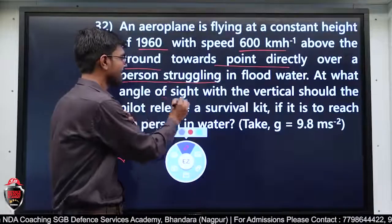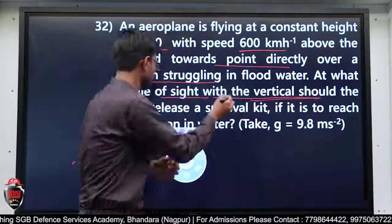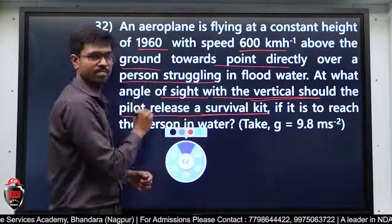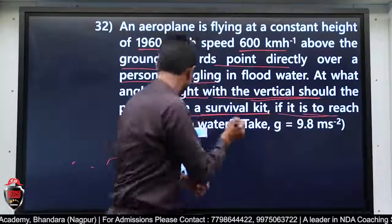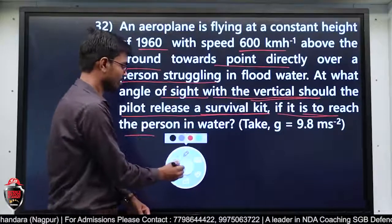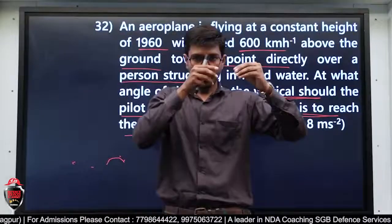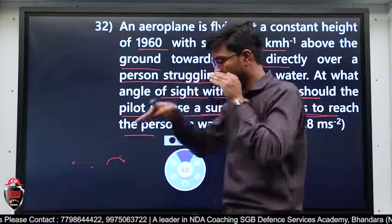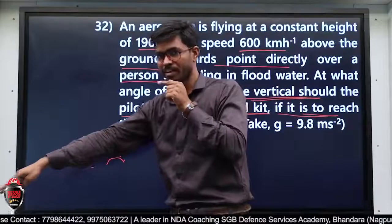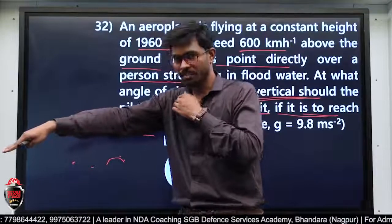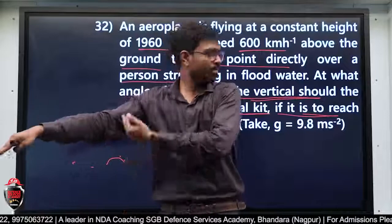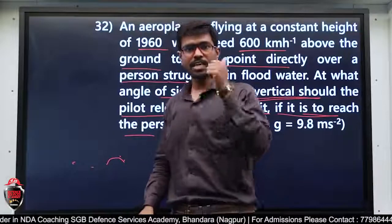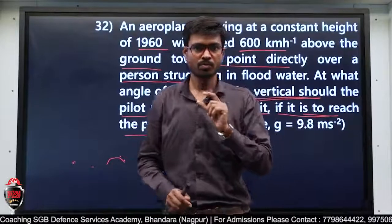At what angle of sight with the vertical should pilot release a survival kit, if it is to reach the person in the water? मतलब pilot बैठा हुआ है, वो नीचे देखेगा — तो यह line of sight हो गई डूबने वाले को देखने की। इस line of sight में vertical के साथ कितना angle बनेगा — वो theta होगा। अब मैं इसका diagram बनाता हूँ।